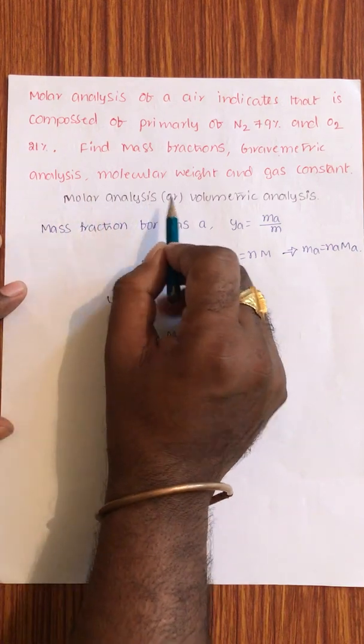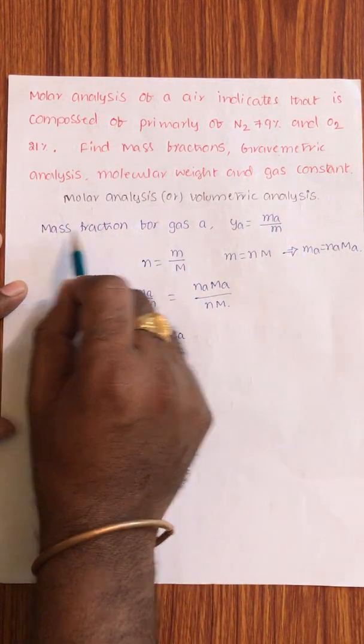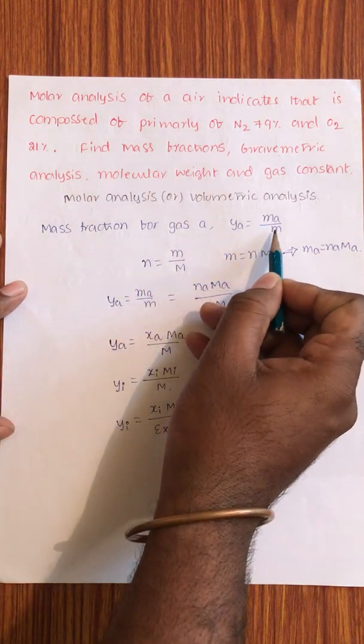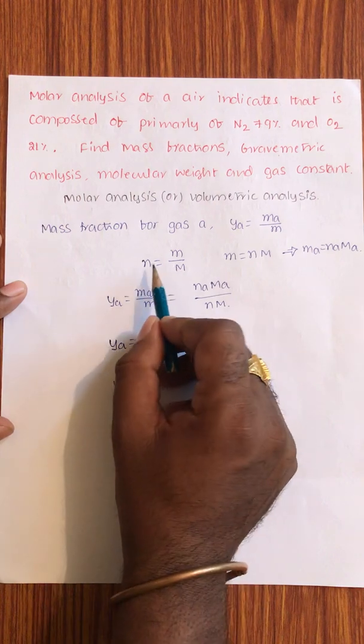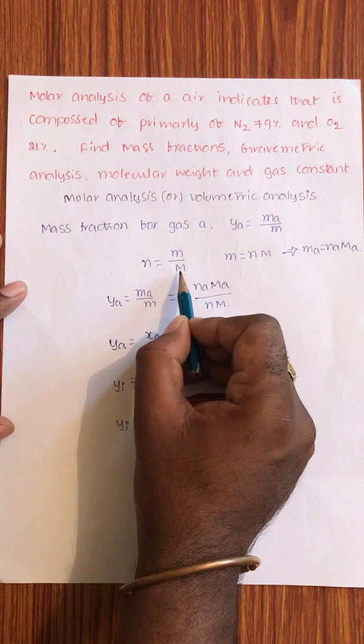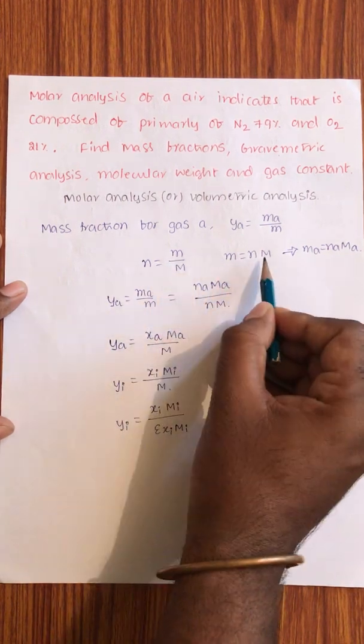Molar analysis or volumetric analysis means the same. Mass fraction for gas A is YA equal to MA by M. The relation between number of moles, mass, and molecular weight is n equal to m by M. So from this, m equal to n into M.